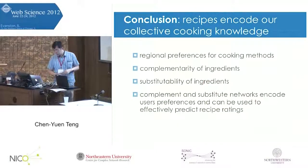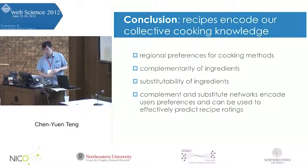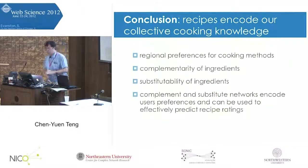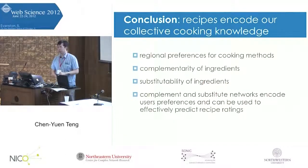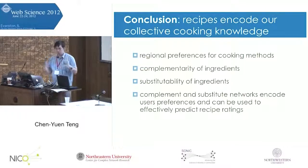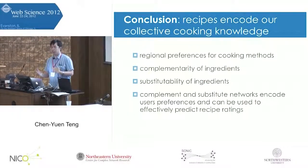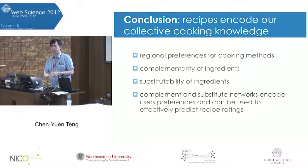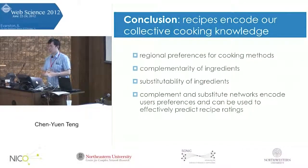For the conclusion, there are several takeaway messages. First, we built two networks: a complement network and a substitute network, which model the mixture of ingredients and the substitutability of ingredients respectively. Finally, we use this information to predict recipe ratings and achieve very impressive performance. Thank you for your attention.